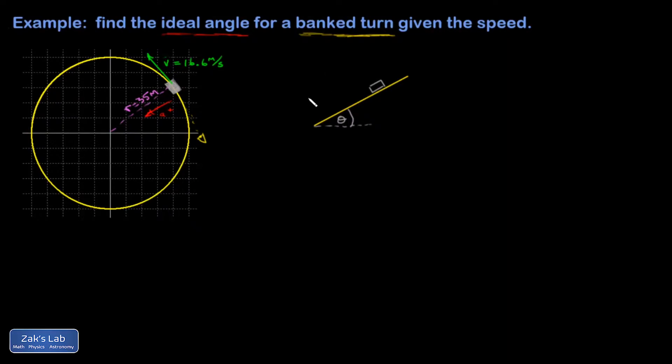And a component of that is going to point to the center of curvature. Well, that can supply some centripetal force, and if you get it just right for the speed, you don't need any friction at all. So that's our problem.